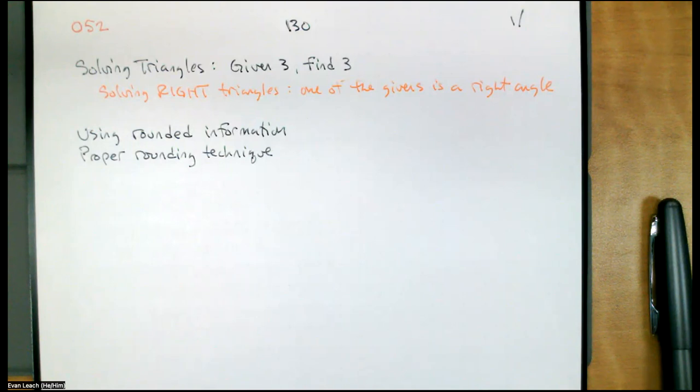Today we want to talk about solving triangles. We've talked about solving pieces of triangles, but we want to talk about the more general game of solving an entire triangle. The game is, I give you three pieces of a triangle, you find the other three pieces of a triangle. We start with the solving right triangle variant of this game, where one of the pieces of given information is a right angle. So you definitely have a right angle to work with. That's one, and then you get two more.